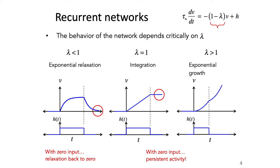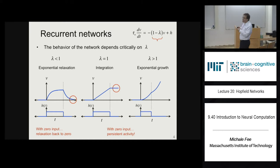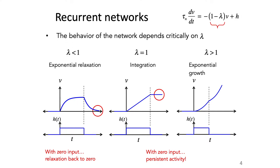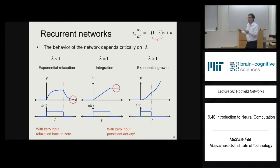Today we focus on networks where lambda is greater than 1. In that case, the quantity inside the parentheses is negative, but multiplied by minus 1, so the coefficient in front of v is positive. If v is positive, dv/dt is also positive, meaning the firing rate grows — and in this case, it grows exponentially. When you put an input in, the response grows exponentially, and even when the input is turned off, the firing rate continues to grow exponentially.